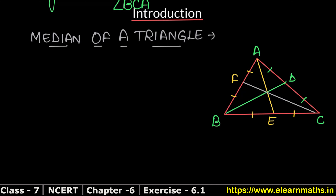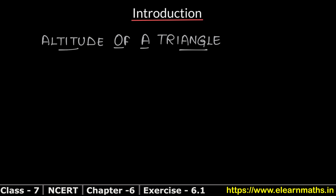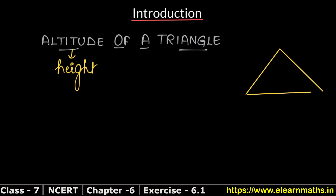Next topic is altitude of a triangle. Altitude means the height of the triangle. The altitude is always drawn perpendicular to the opposite side — that means it makes a 90 degree angle with the opposite side. Remember, altitude is always a straight line that is perpendicular to the opposite side.